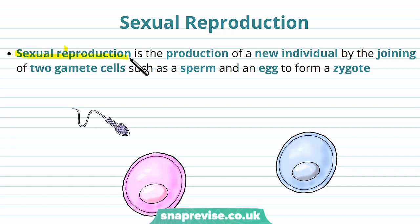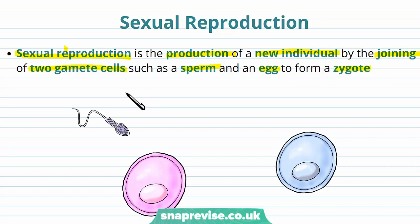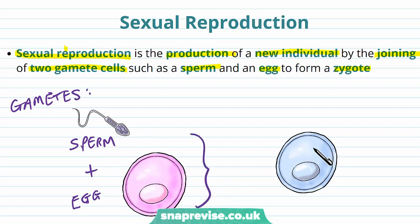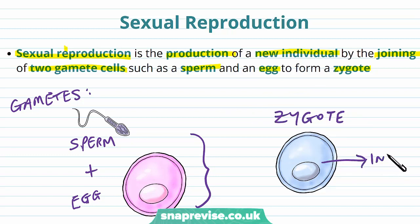The definition of sexual reproduction is the production of a new individual — a new organism — and this is done by the joining of two gamete cells, such as the sperm cell and the egg cell. When they join together they form a cell called a zygote. The male gamete is known as the sperm, the female gamete is known as the egg cell, and these two come together to form one single cell with all of their combined contents. The cell formed in that fusion is called the zygote, and then the zygote will develop into an individual.